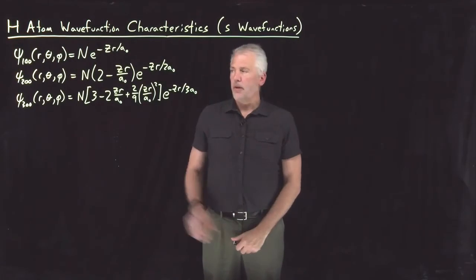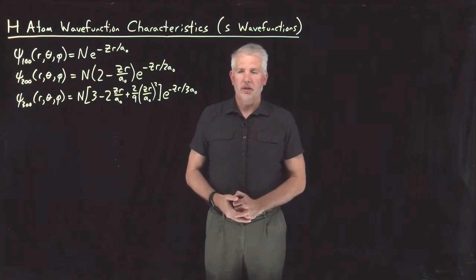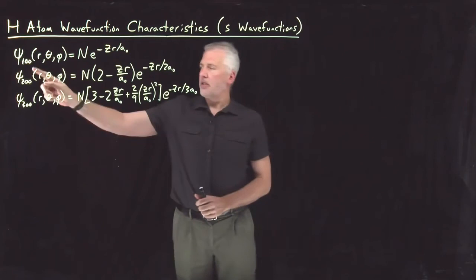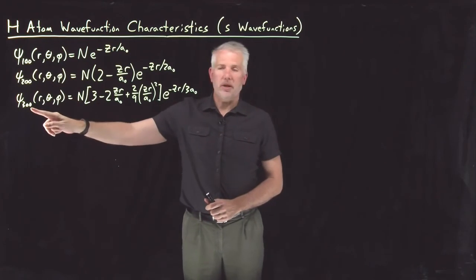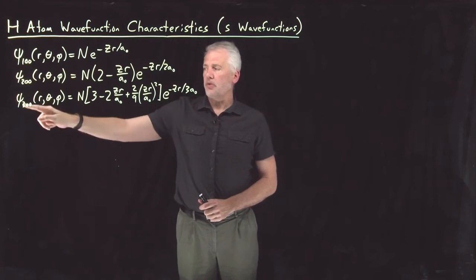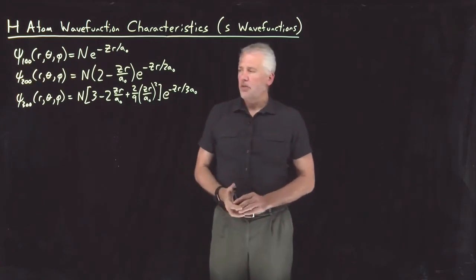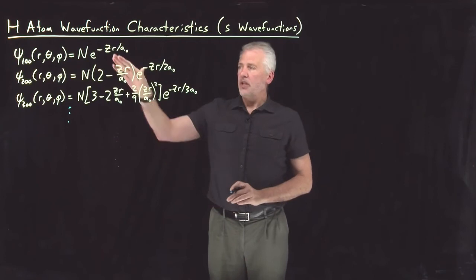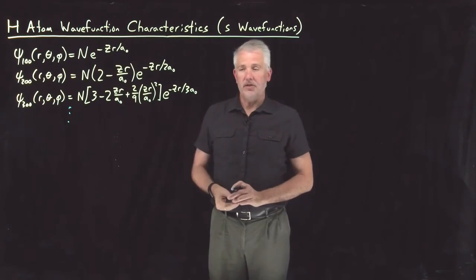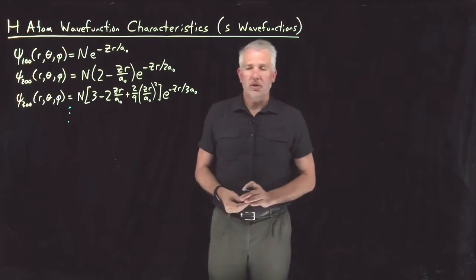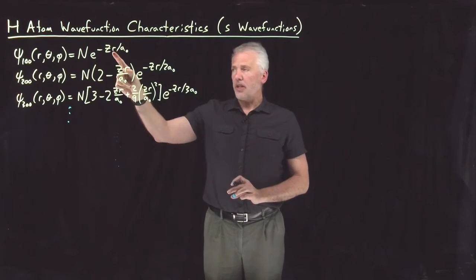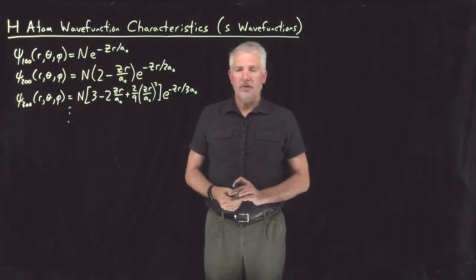Now that we know how to write down the wave functions for the hydrogen atom, I've written down a few of them here. Let's take a closer look and see if we can understand what those wave functions look like graphically or spatially. What I've written here are the first few wave functions with L equals 0 and M equals 0 — with quantum numbers n equals 1, n equals 2, n equals 3. The reason I've chosen these three is they don't have any theta or phi dependence. Because L equals 0 and M equals 0, there are no terms involving sine or cosine theta or e to the i phi. So there's only r dependence, no theta phi dependence. What that means is these wave functions are spherically symmetric.